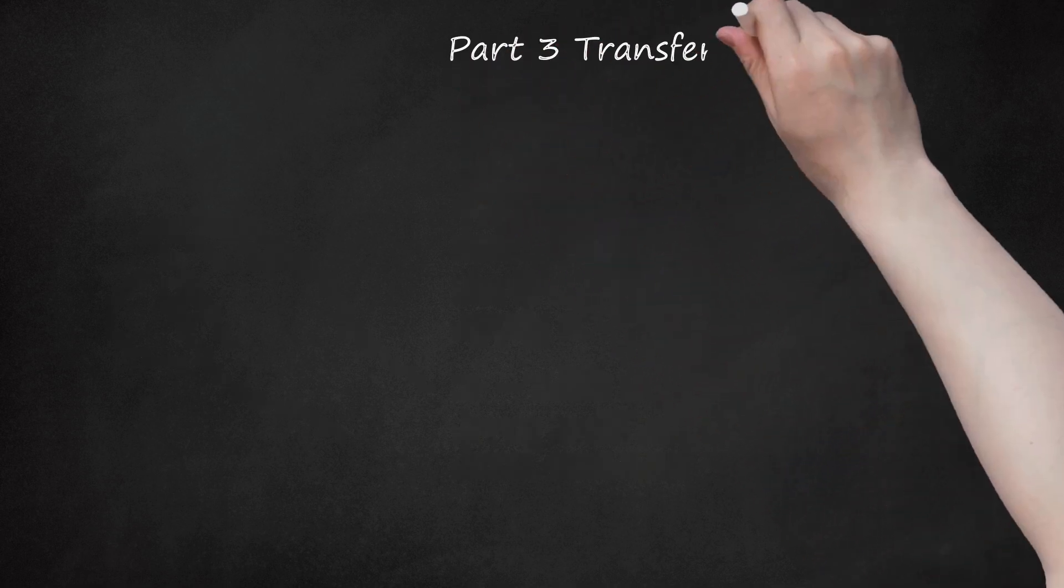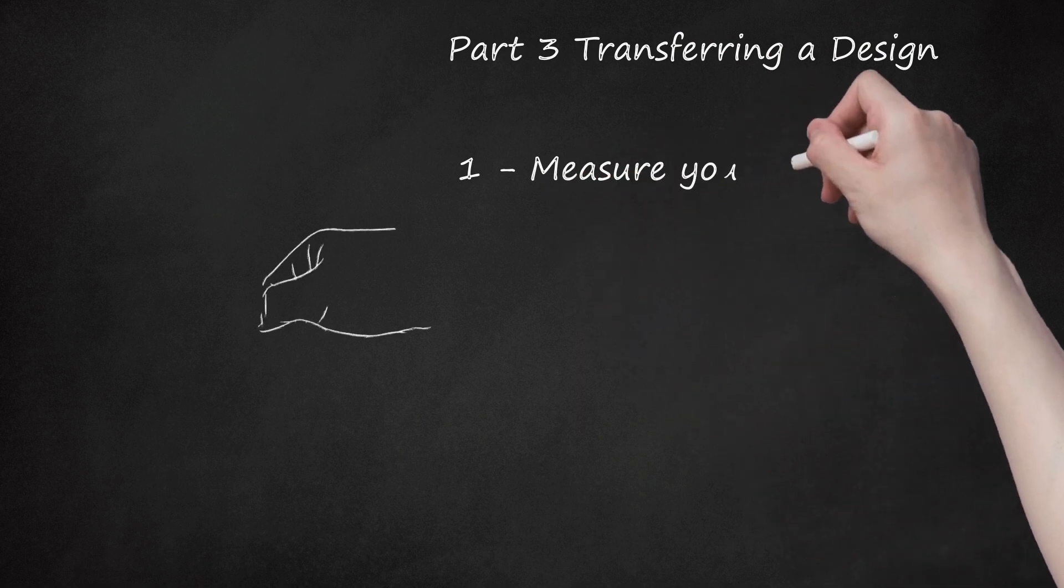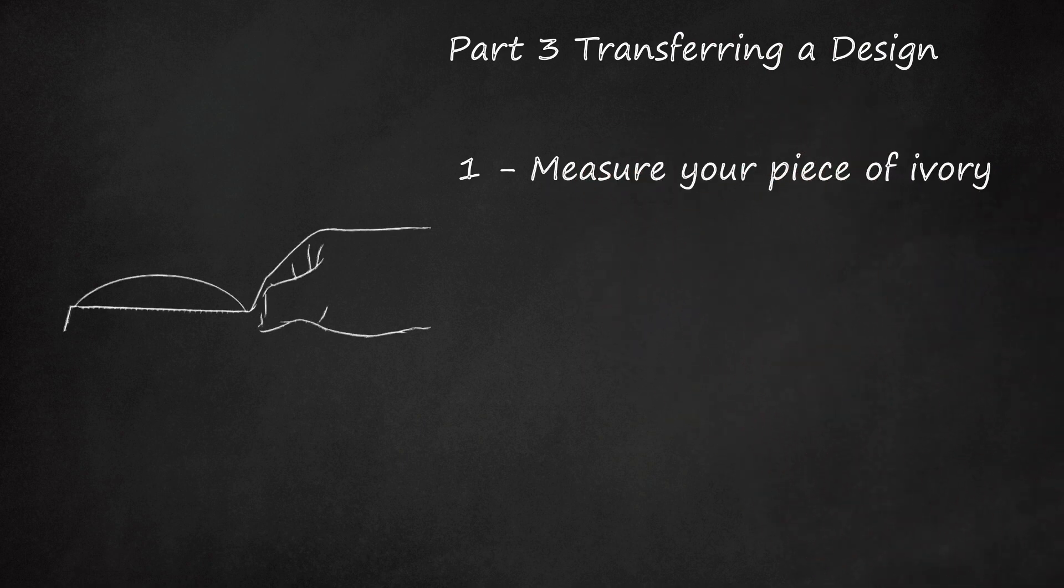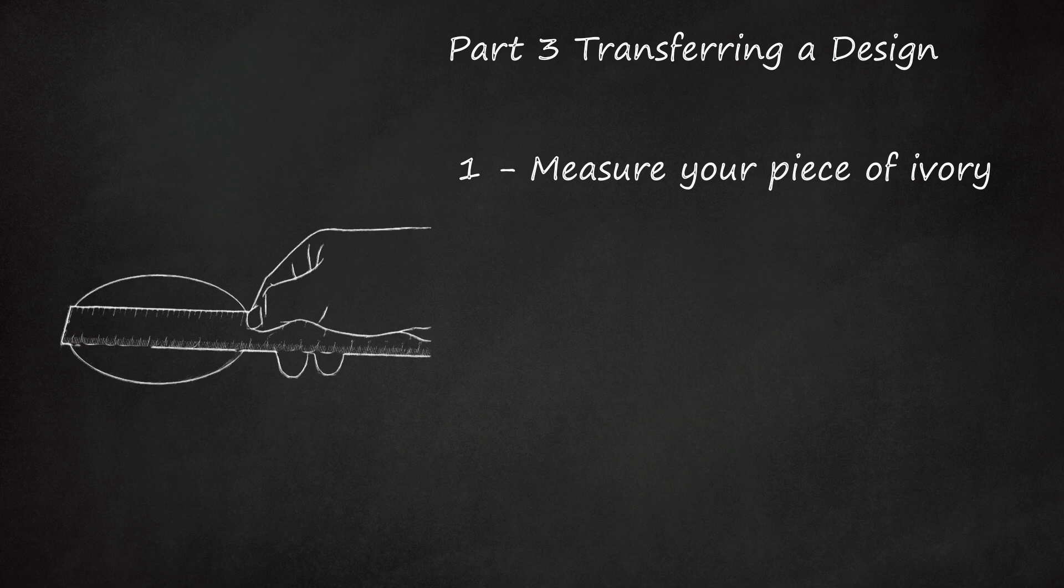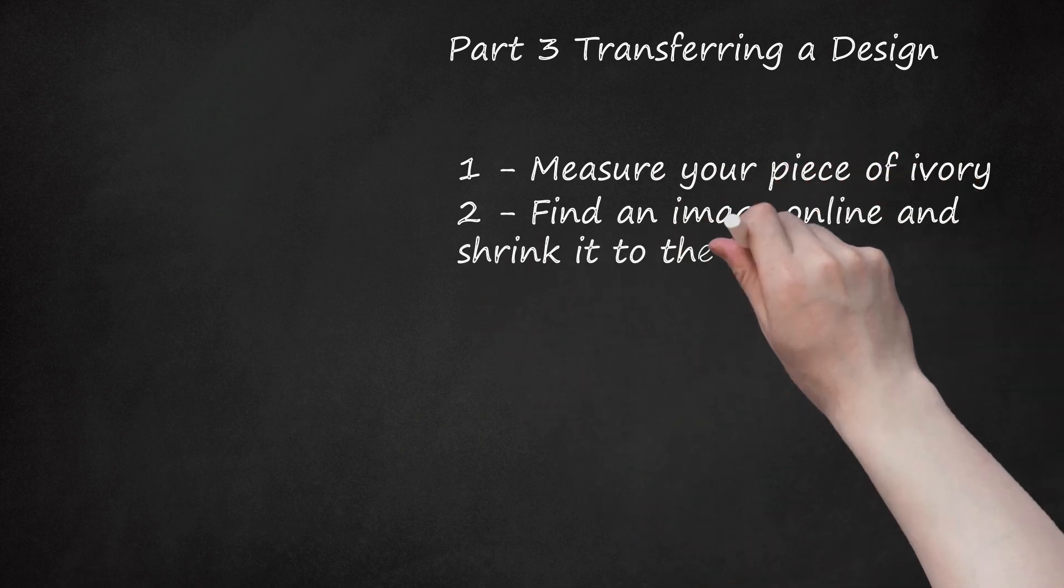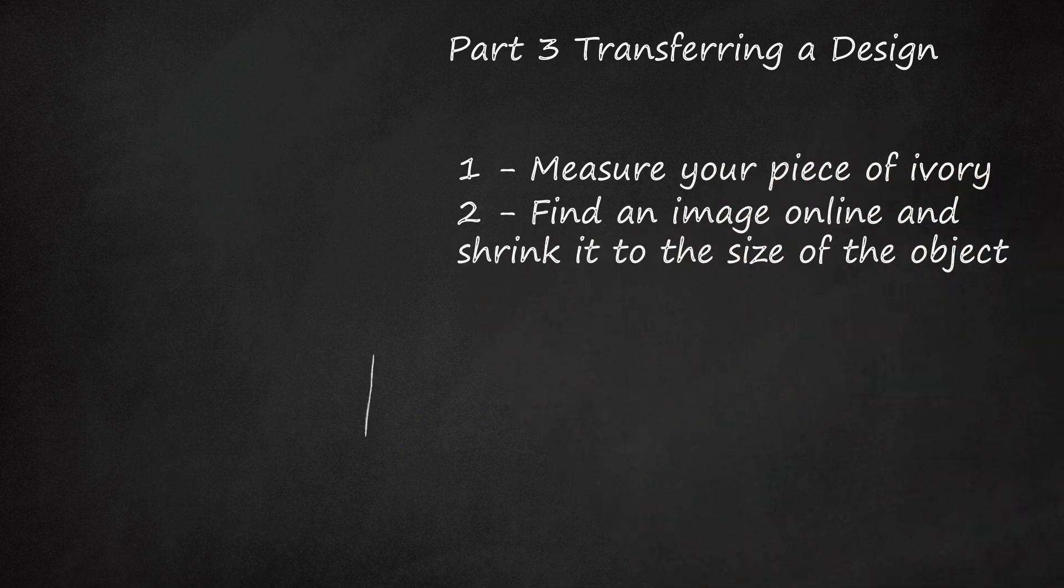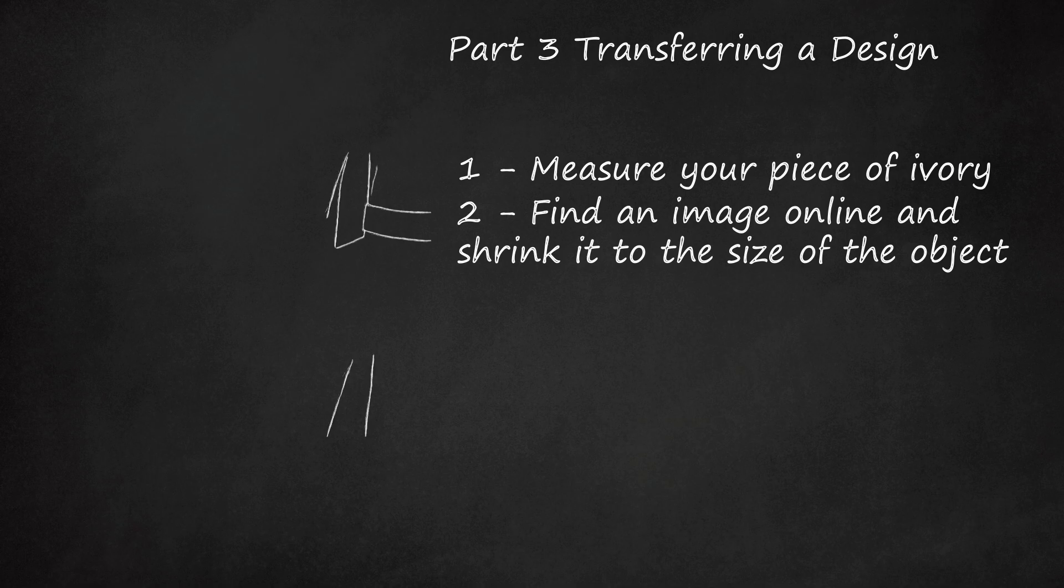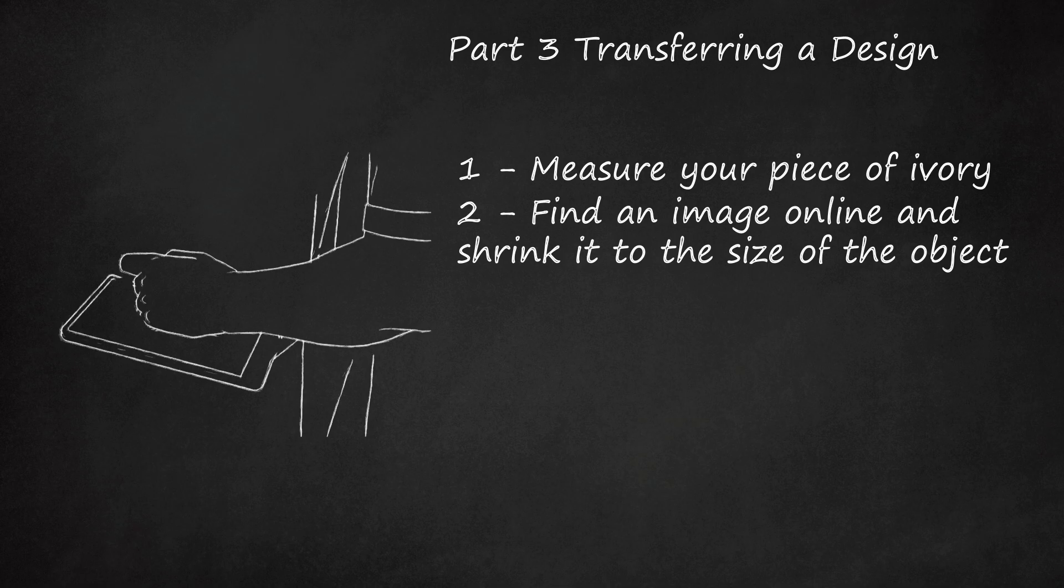Part 3 Transferring a Design. Measure your piece of ivory. You will want a small detailed drawing to use as your scrimshaw design. Find an image online and shrink it to the size of the object. Remember to leave 1.5 inch of space on all sides. A sketch-like image with good outlines and some shadowing is best for scrimshaw.